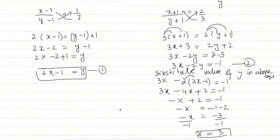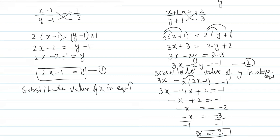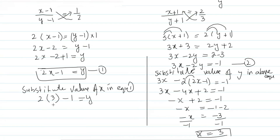Substituting the value of x into equation one to get y: y = 2x − 1 = 2(3) − 1 = 6 − 1 = 5. So y = 5.